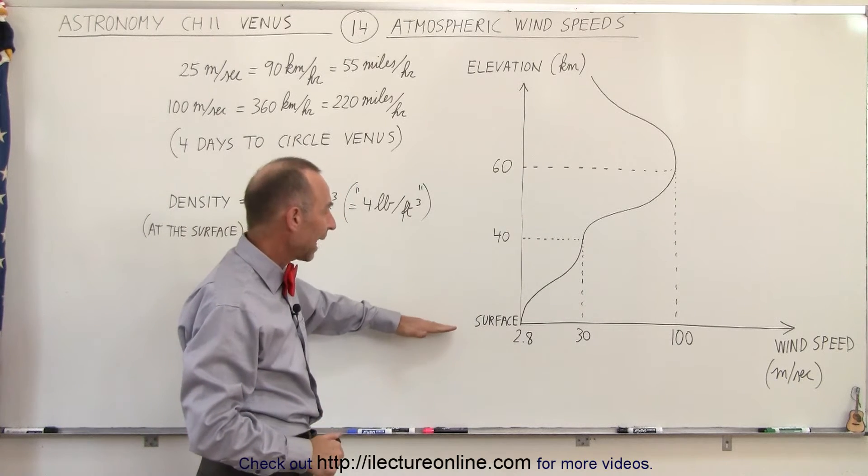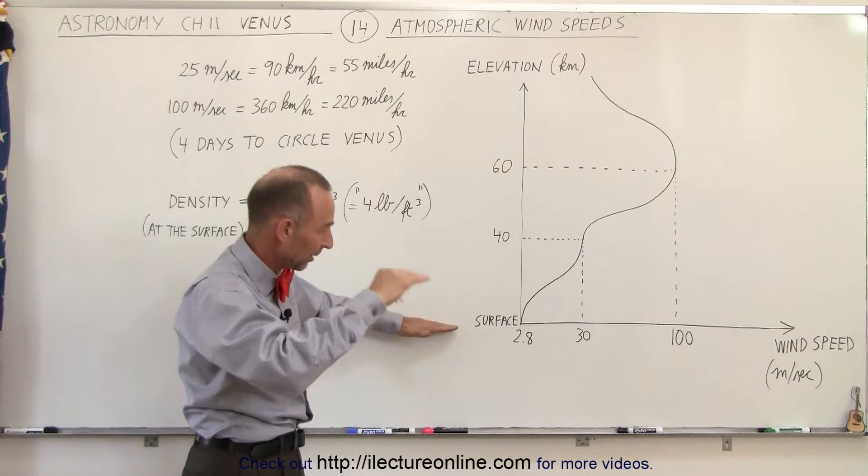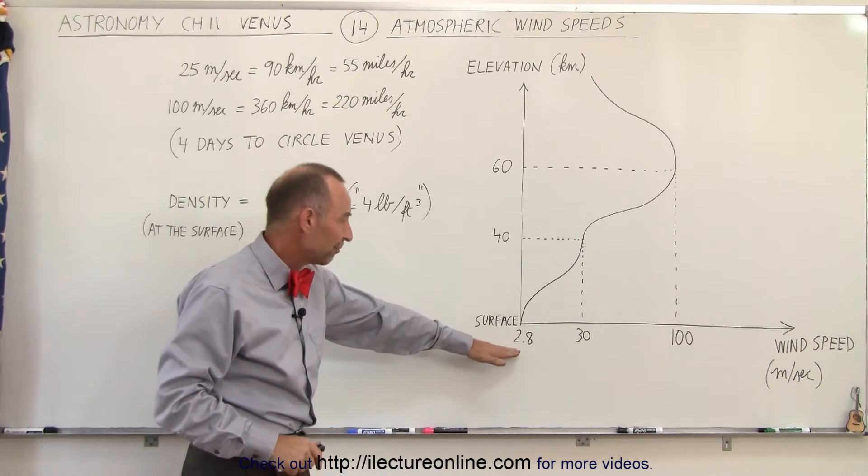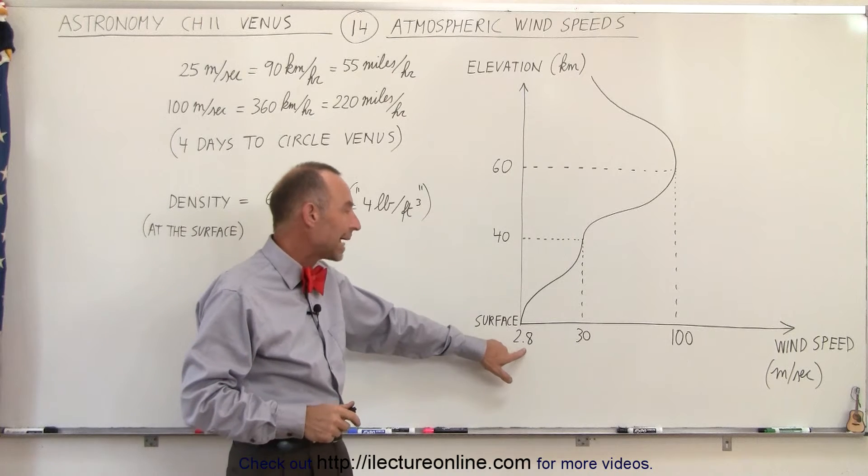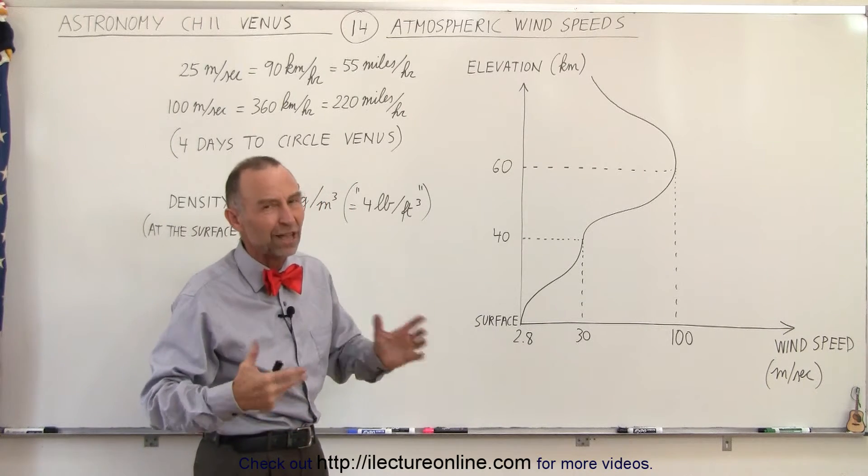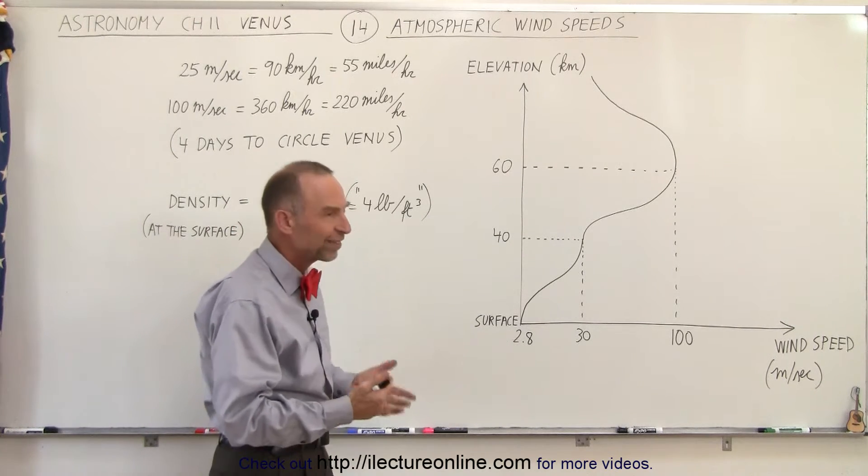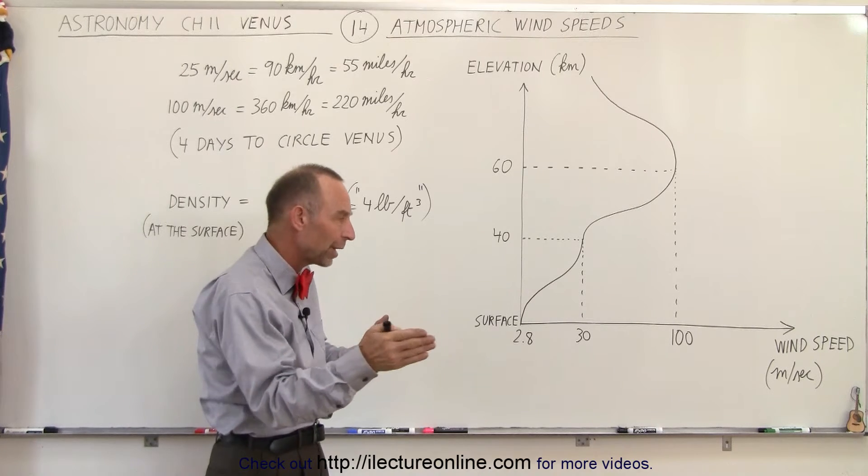So it turns out that at the surface, as measured by the spacecraft that landed on the surface, we found that the speed of the atmosphere there is about 2.8 meters per second, which is not very fast. That's almost 10 feet per second, so it's moving relatively slow.